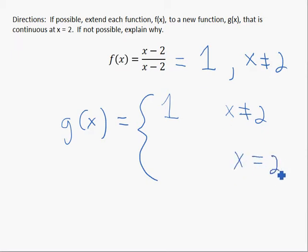So it has to be defined. If I want it to be continuous at 2, it has to be defined. So I have to define what it is at 2, and I want the limit to exist.